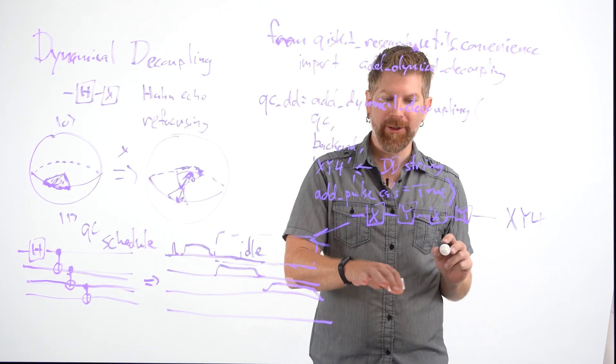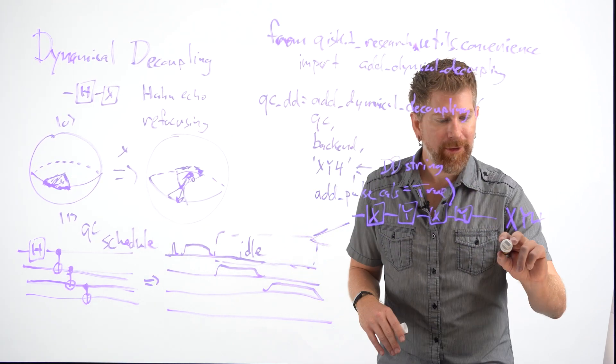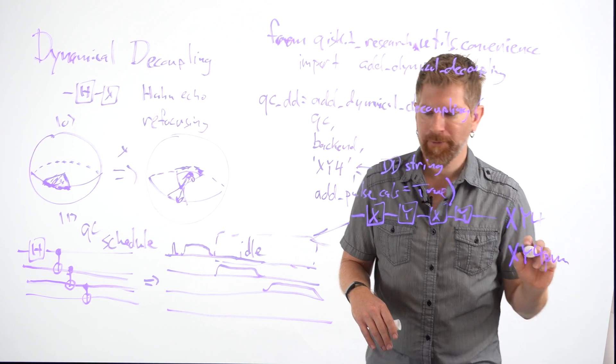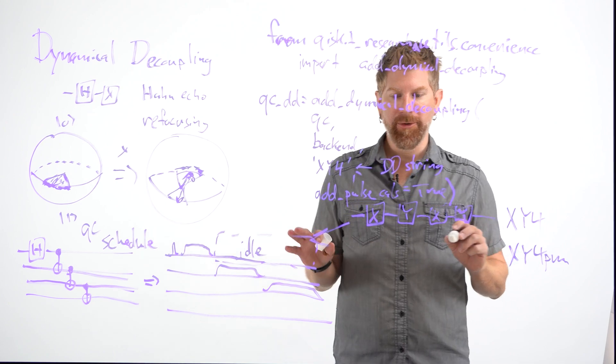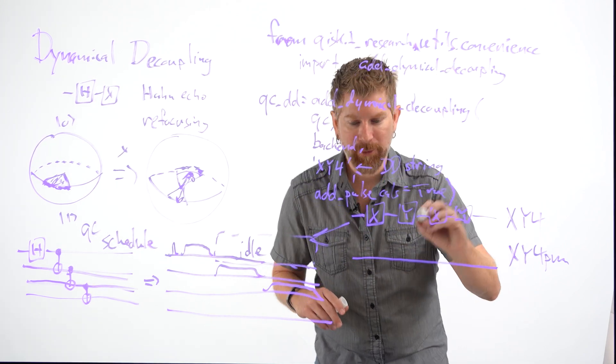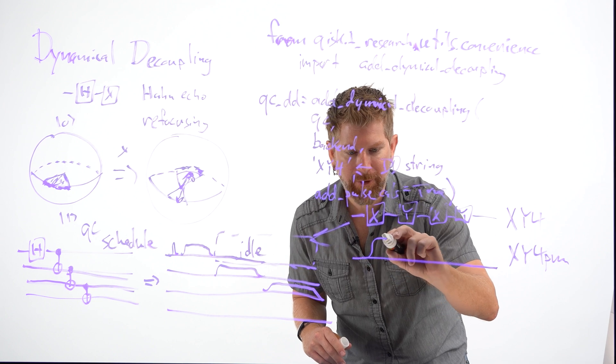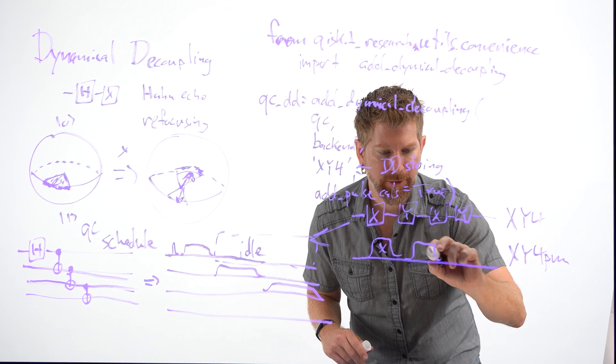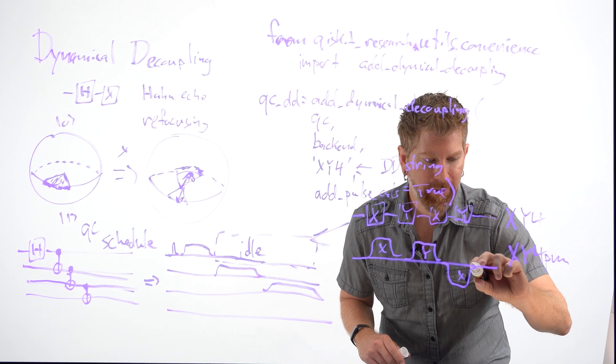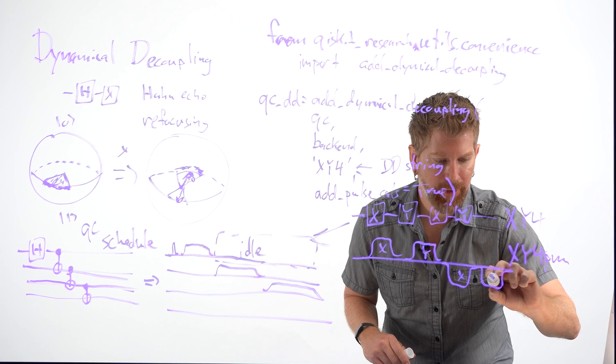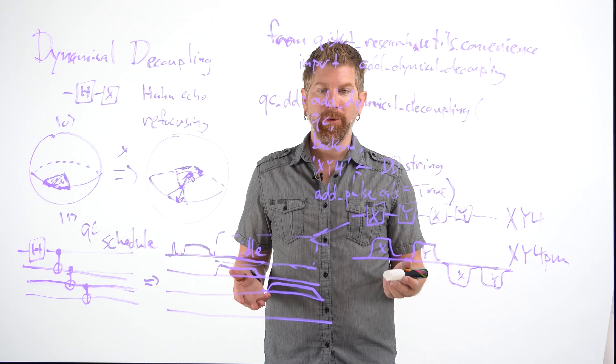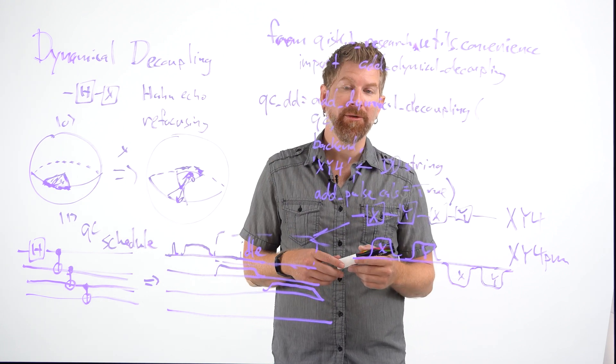So if we have, also, for example, we call this xy4, we have different examples, such as xy4pm, which are actually looking at the pulse level data. And they do the same kind of thing as xy4 does, except what they'll do is flip the actual amplitude of the pulses. So you have xy, but then you'll have x and y. And there are various number of other sequences that you can put in using the Qiskit Research Repository.